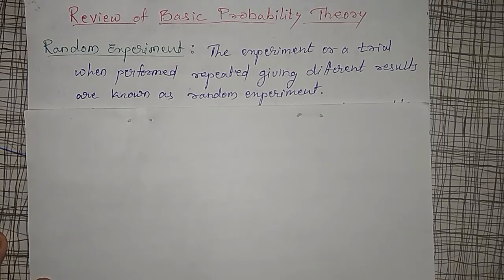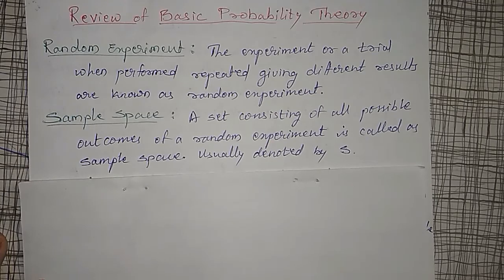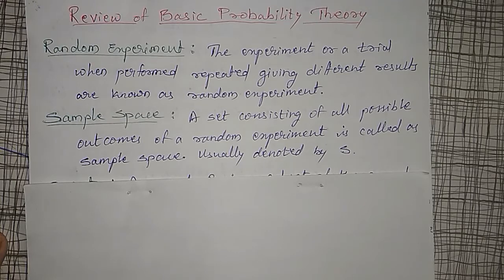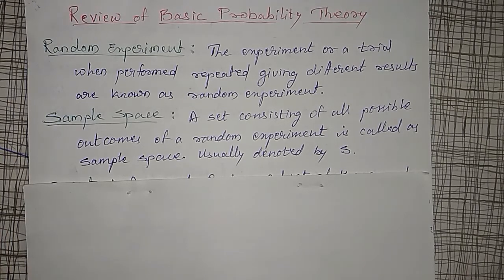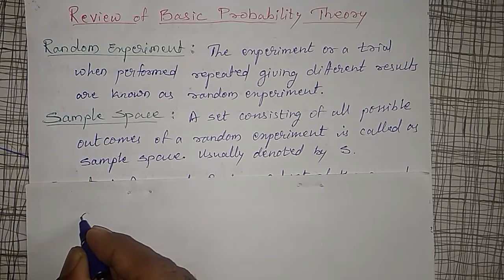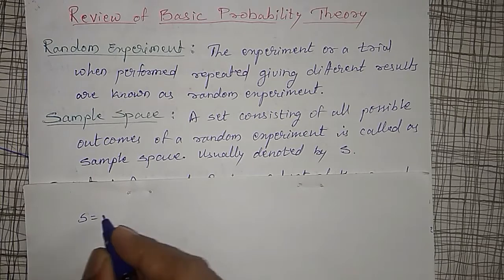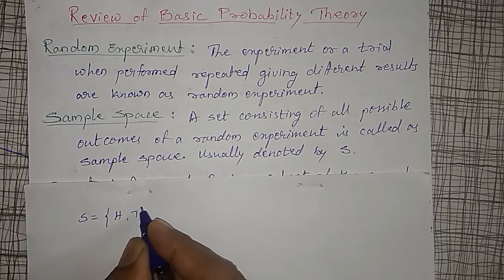After a random experiment, we define the sample space. A set consisting of all possible outcomes of a random experiment is called a sample space. Whenever you are doing any experiment, some possible outcomes will be there. For example, whenever a single coin is tossed, the possible outcomes are head or tail.